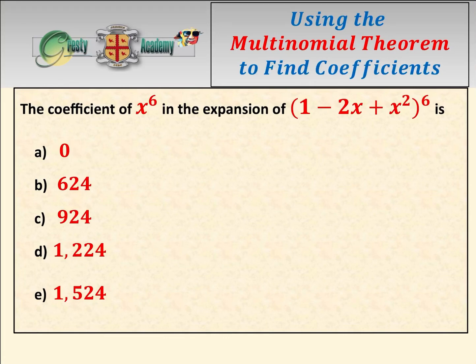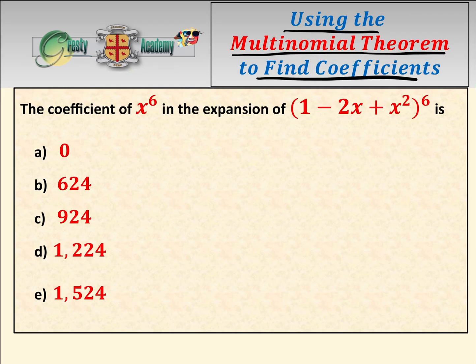In this video we're going to be looking at how to use the multinomial theorem to find coefficients. The way we're going to do that is to answer this question: we have an expansion (1 minus 2x add x squared) to the power of 6, and we have to find the coefficient of x to the power of 6.